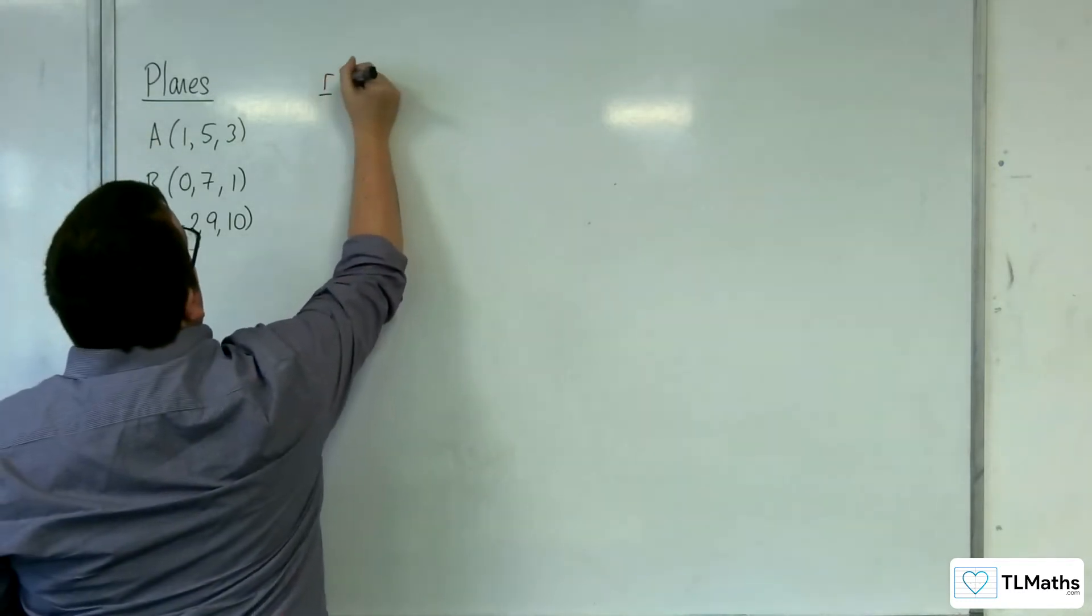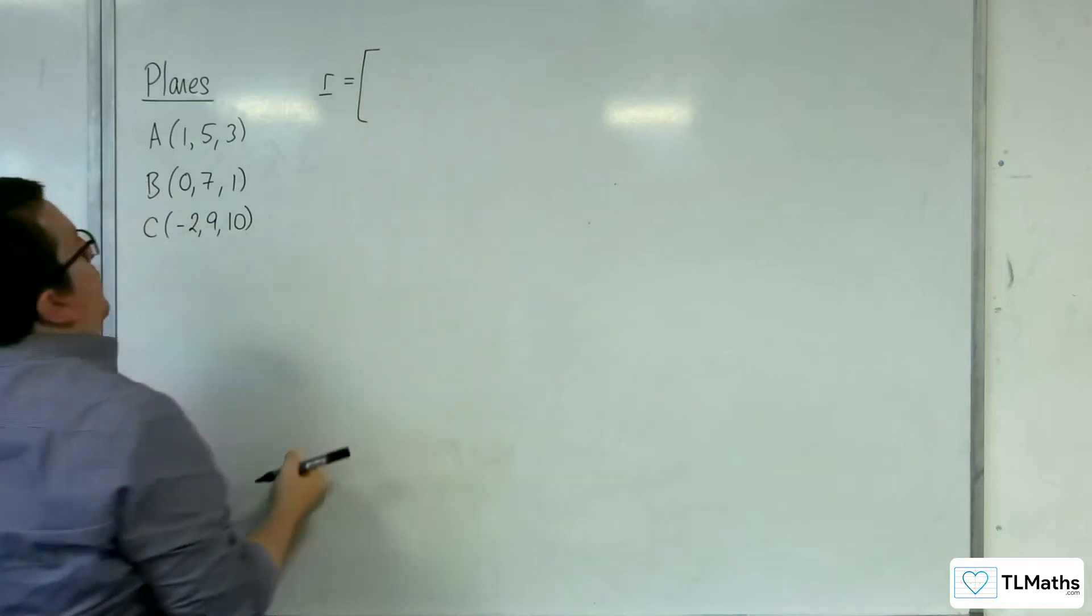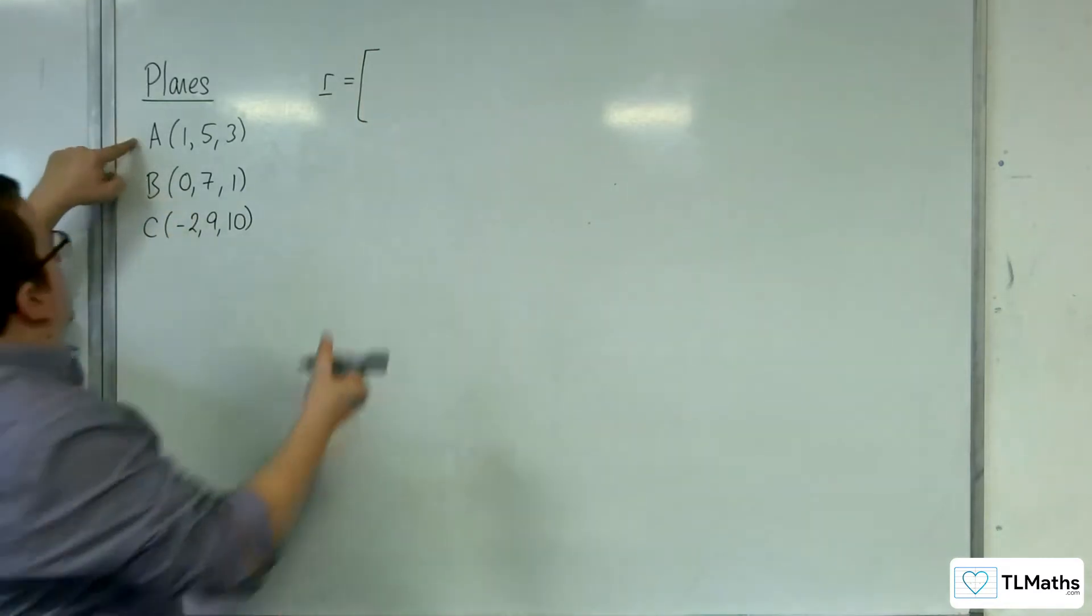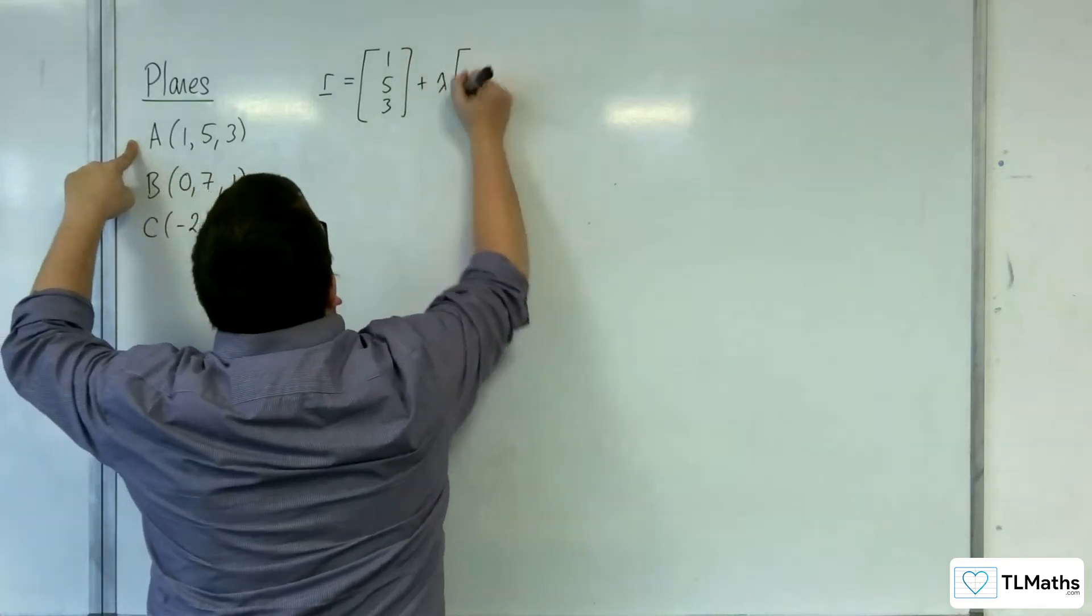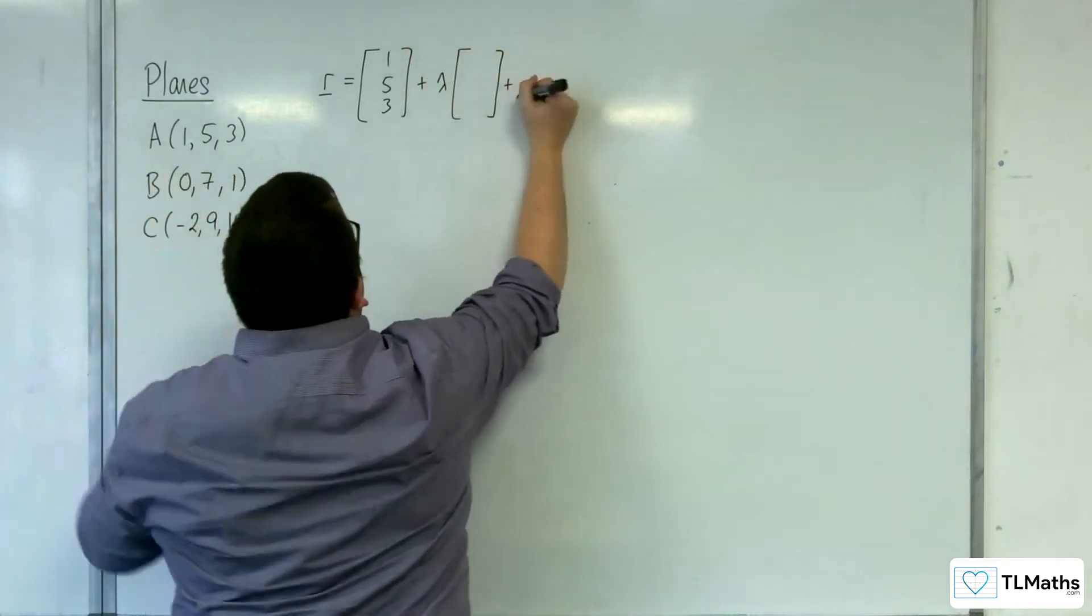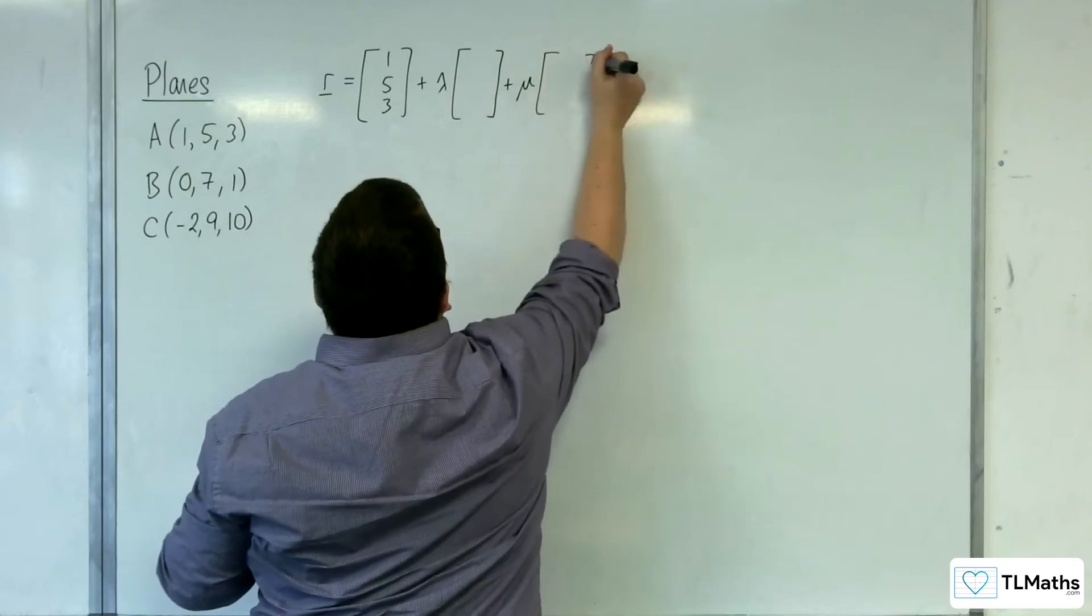We know that it's going to be of the form R equals, and we're going to start with a position vector. Let's choose A, (1, 5, 3), plus lambda times one direction vector, plus mu times another direction vector.